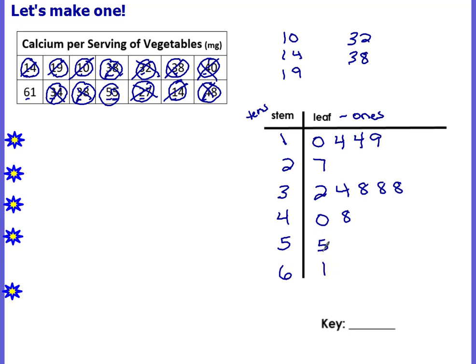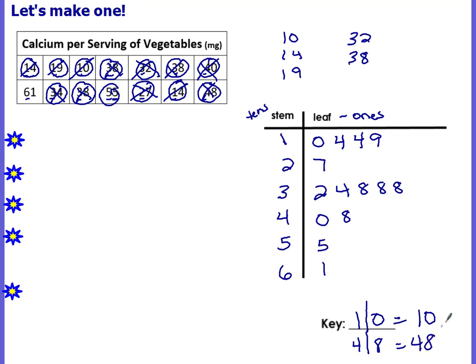So this would be our stem and leaf plot. You always want to write a key — a key tells the person looking at your stem and leaf plot how to read it. For your key, you put the stem, then the line between stem and leaf, then one of the leaves. For example, one | zero equals ten. You could also do four | eight equals forty-eight. It doesn't matter which one you use, but it tells the person how to read the plot.